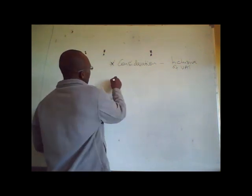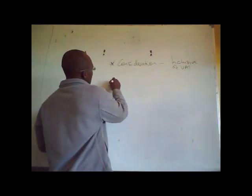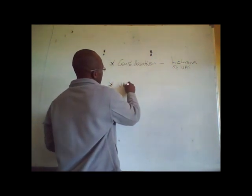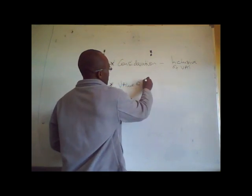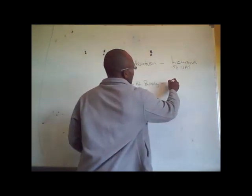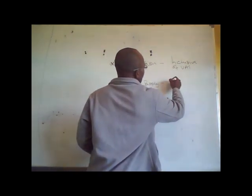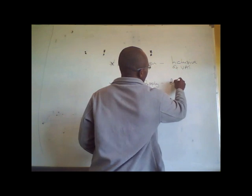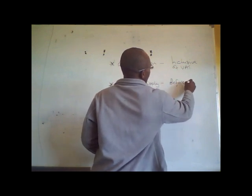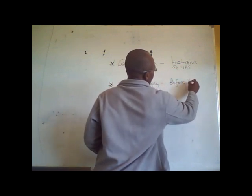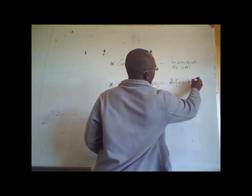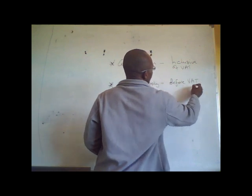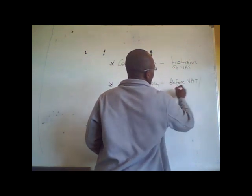There is also what is called value of supply. Value of supply is the amount before value added tax — before VAT — or amount excluding VAT.